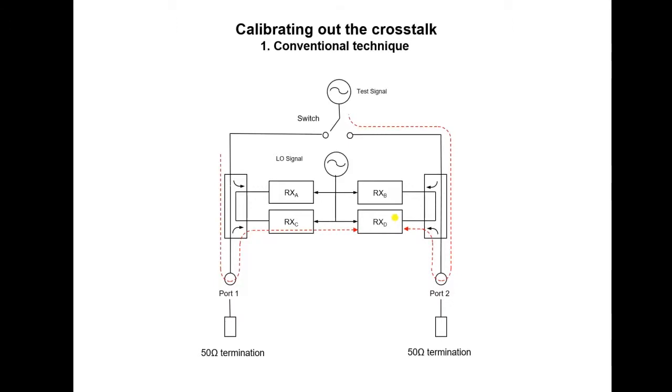Of course, the terminations don't have to be 50 ohms. They could be short circuits or open circuits. This approach can work. You measure the crosstalk during calibration, and then remove it mathematically during the measurement. The problem is that the device under test can present a match which is largely different at some frequencies to that which you use during calibration. Therefore, the correction does not work so well.